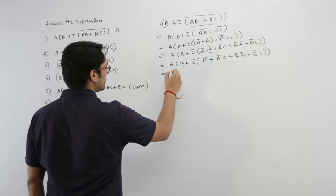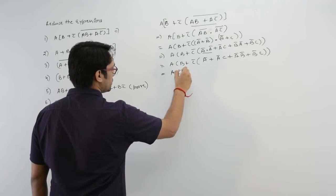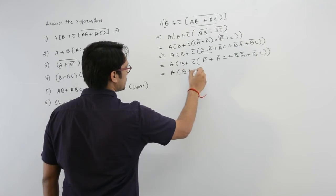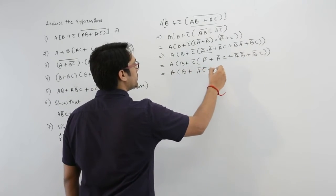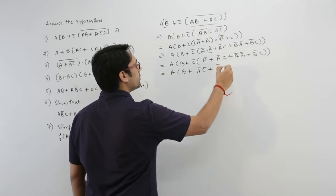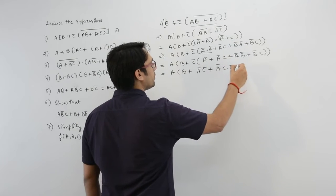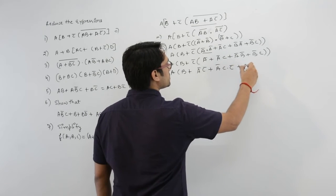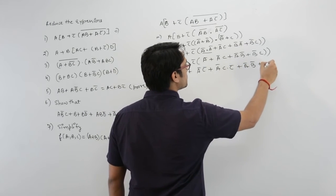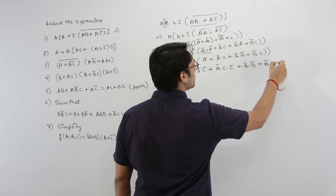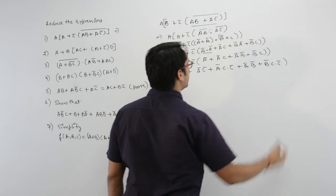Now expand this further: it is B plus A complement C complement, plus A complement C dot C complement, plus A complement B complement, plus B complement C dot C complement.